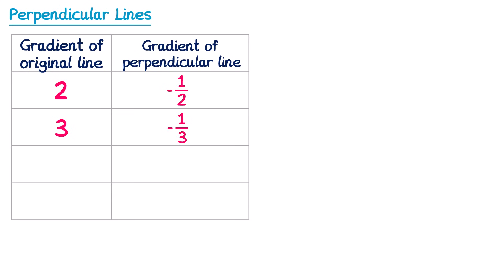You might be able to see a pattern here. If I increase the gradient of the original line once again to 4, the gradient of the one that's perpendicular will be negative one quarter. Notice how one of them is always positive and the other one is always negative. This applies the other way around as well — so rather than 5, what if it were negative 5? You can probably spot that it's going to be one fifth, and it will be positive this time since the original line had a negative gradient.